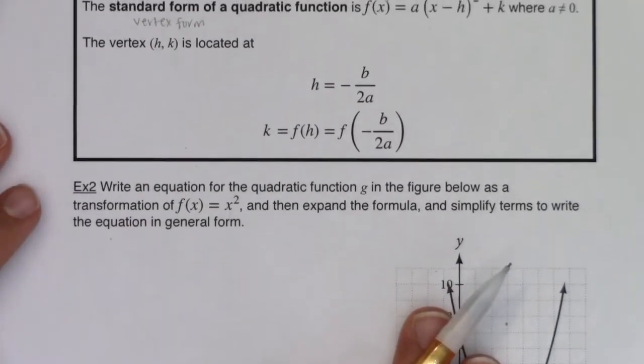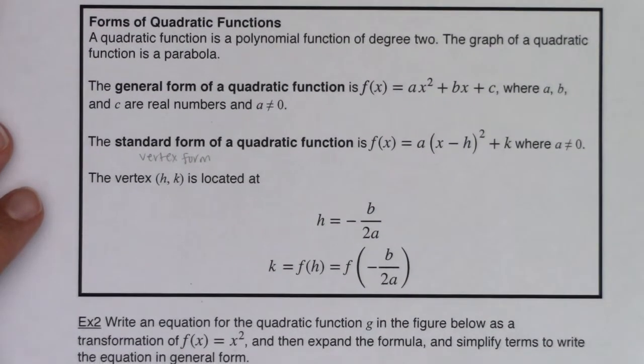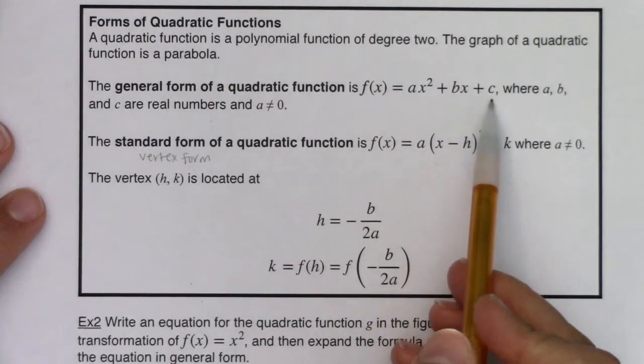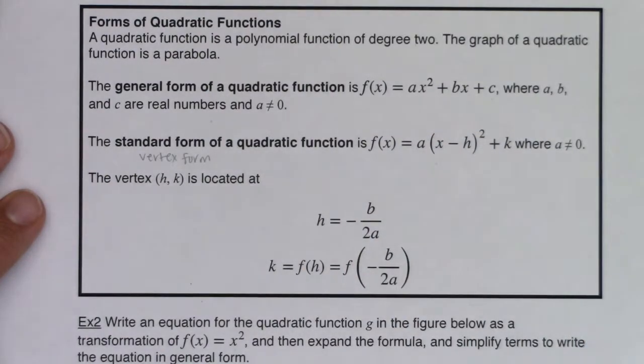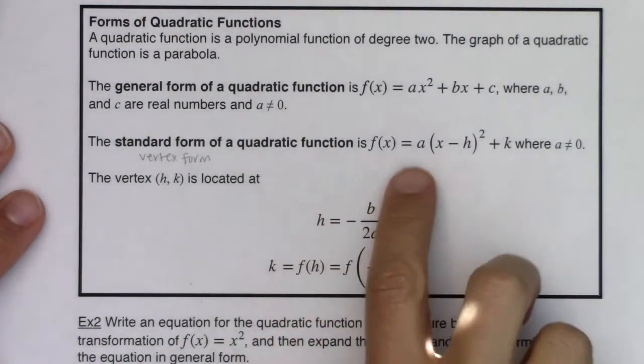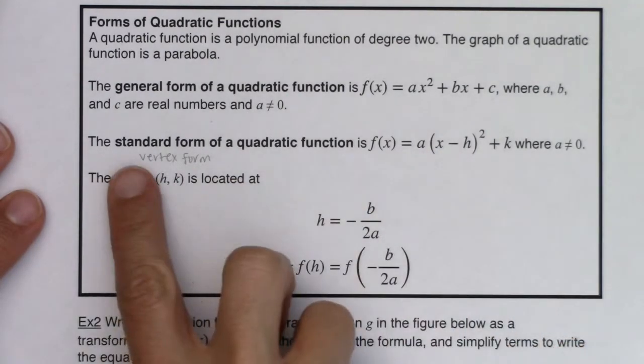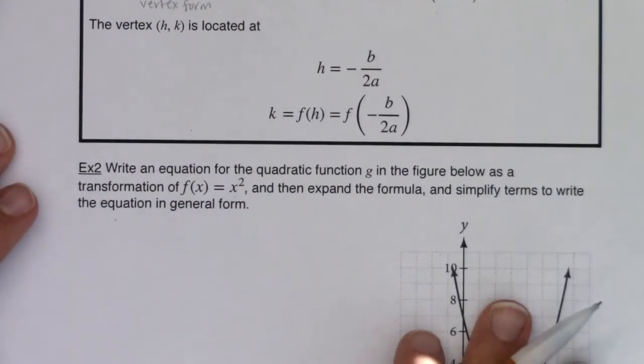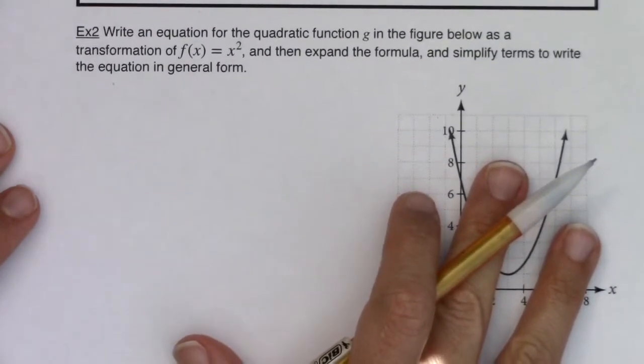So I need to end in general form. And I know we just discussed it, but let me scooch this right back down so we can talk about it one more time. General form is ax² + bx + c. So at the end of this, I'm going to have some a, b, and c for my quadratic, and we're going to figure out what those are. But for right now, I'm going to start with vertex form. And the reason I'm going to start with vertex form, or standard form, is because I actually can read the vertex on this graph.